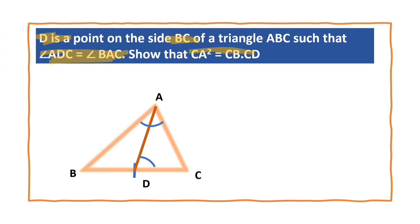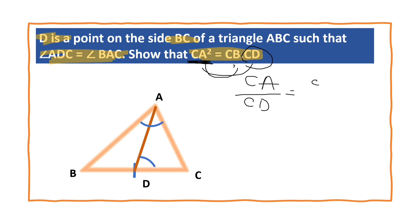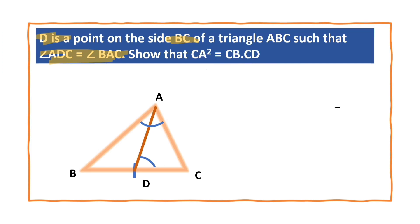Let us rewrite the relationship CA square equals CB into CD. Bringing CD to the left side, CA by CD is equal to CB by CA. So CA by CD is equal to CB by CA.